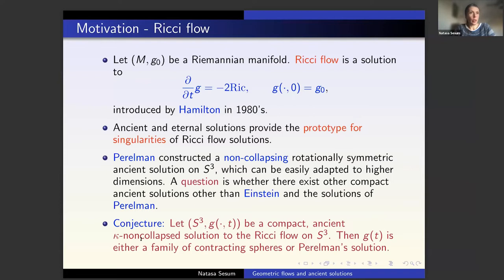Now I want to mention how all these methods can be applied to the Ricci flow. The Ricci flow equation evolves the metric by negative two times Ricci, starting with some g_0. Ancient and eternal solutions are important because they model singularities of the flow. Perelman in his paper constructed the analogs of the ancient ovals, known as Perelman's solutions, which are non-collapsing rotationally symmetric solutions on S^3. His construction can be easily adapted to any dimension.